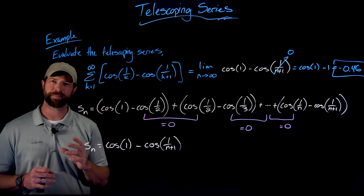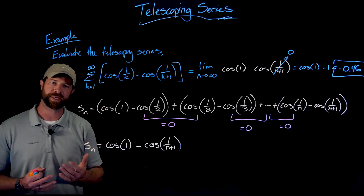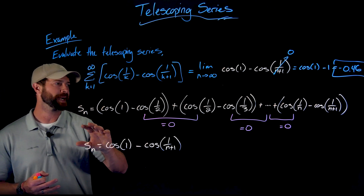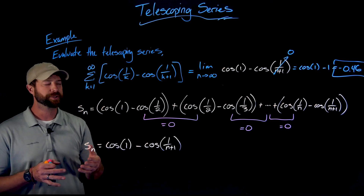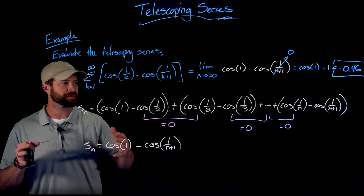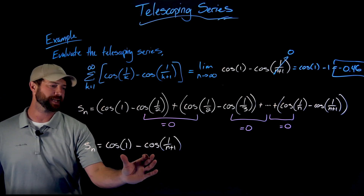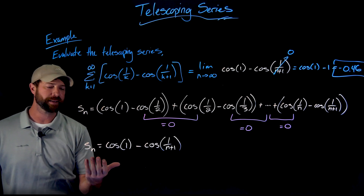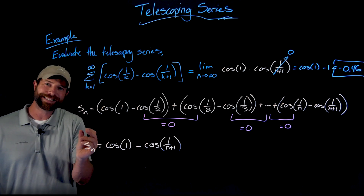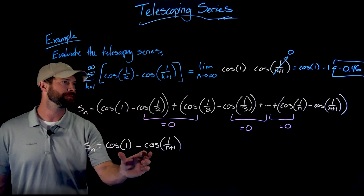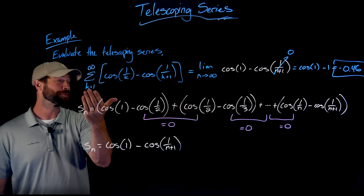A word of caution and a quick recap: you need to be careful because there are different forms of telescoping series. The way to really deal with a telescoping series is to write out at least a few terms of the nth partial sum, see if you can identify the pattern, determine which terms are canceling, and figure out which terms are left. Almost always, it will be these n-dependent terms that survive. Through that investigation, you get an explicit formula for the nth partial sum, and then take the limit as n goes to infinity to evaluate the infinite series.